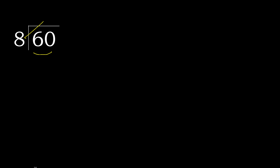8 — multiply by which number is nearest to 60 but not greater. 8 multiplied by 8 is 64; 64 is greater. Multiply by 7: 56 is not greater.